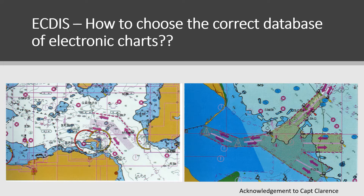Hi everyone, today we have another new video on AgDIS for you. In today's video I am going to be talking about the database that is available for choosing your electronic charts for ship's navigation — the different databases available, how you can choose the correct one, and why you should choose it. This is a very important topic if you are using AgDIS systems on your ships for the primary means of navigation.